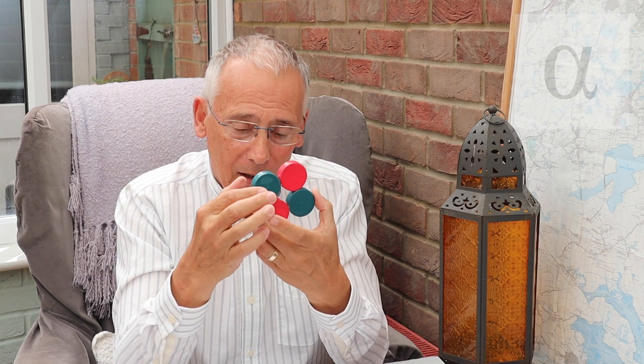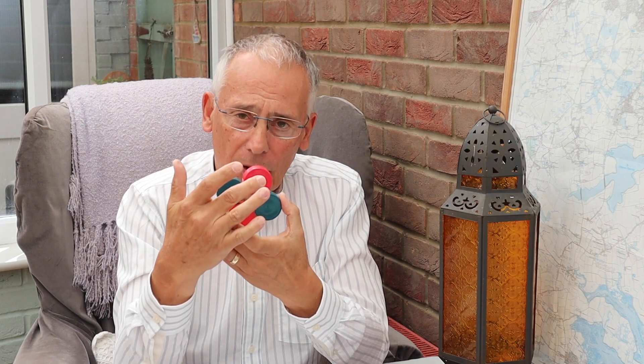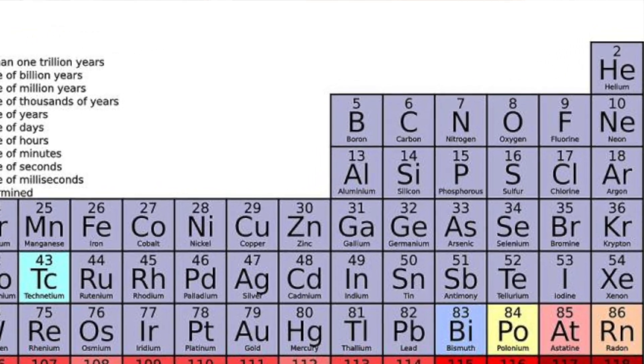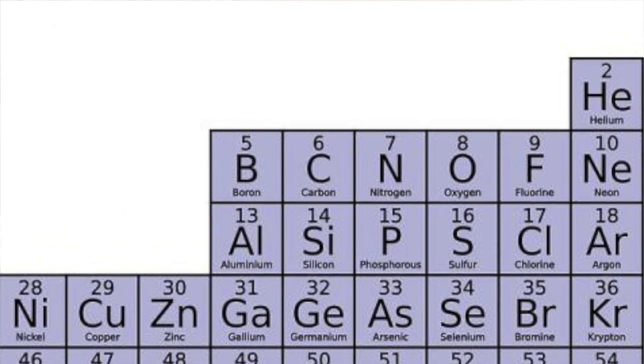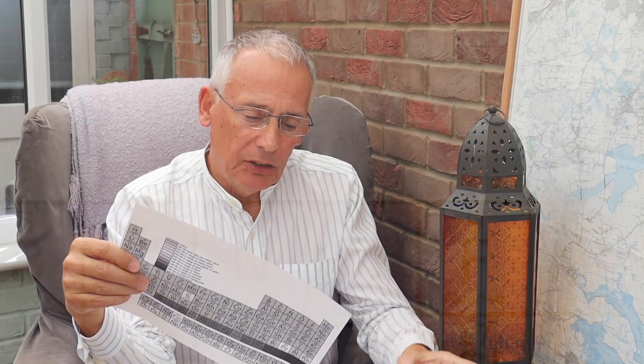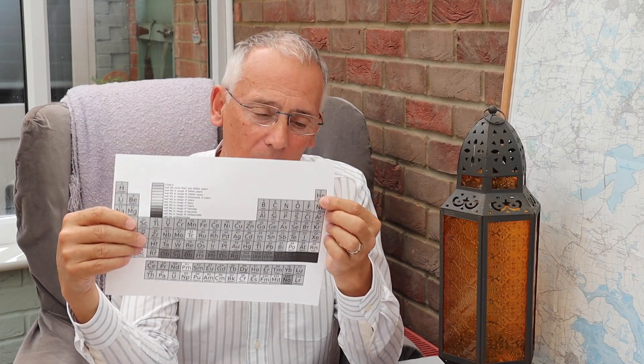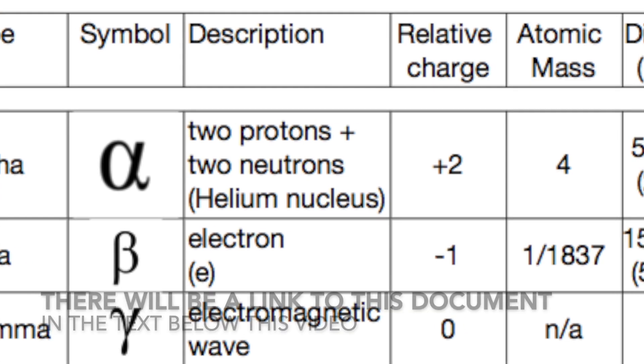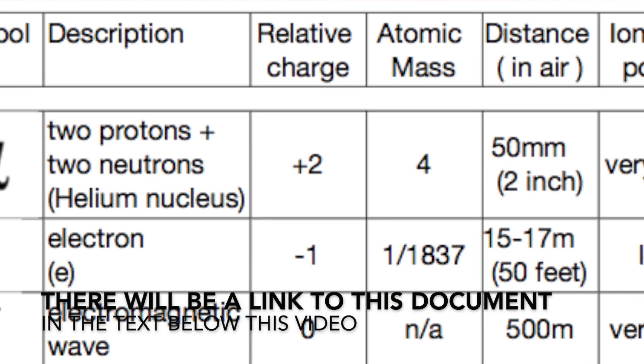An alpha particle — my little model here — has got two protons and two neutrons. If you remember from our periodic table of elements, an element is defined by the number of protons. Helium has got two protons, so an alpha particle is in fact a helium nucleus without any electrons. The relative charge is plus two and the atomic mass is four.